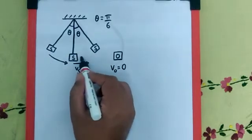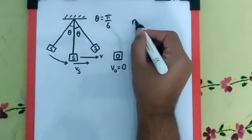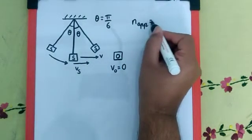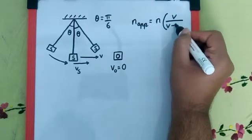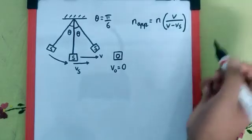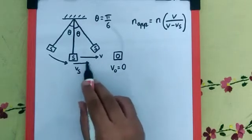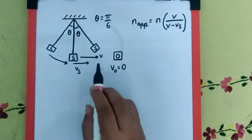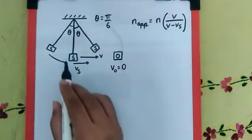And that means the sound is also traveling towards the observer which is by default. So basically the formula of N apparent is going to be N into V upon V minus Vs. Because the observer is not moving and the source is moving in the same direction as the sound. Now we need to calculate first the speed of source over here.